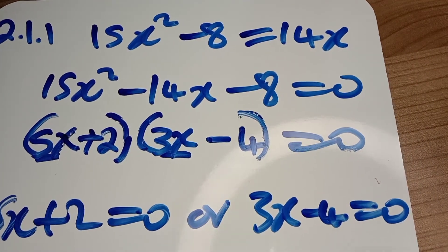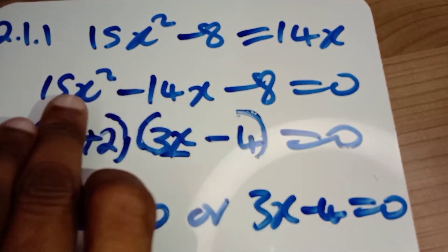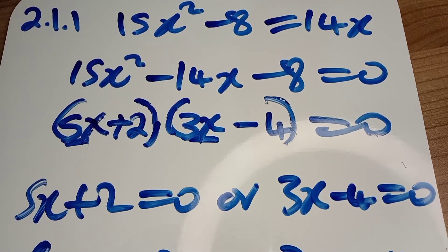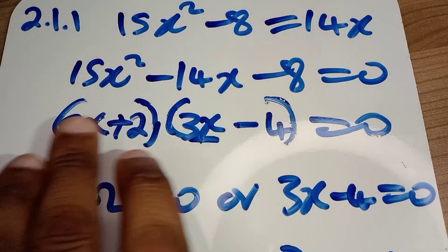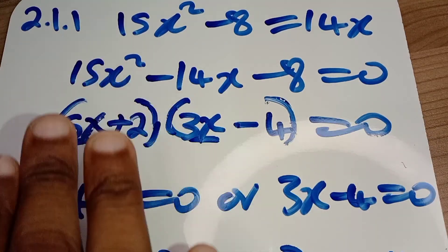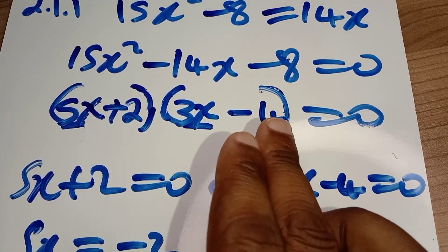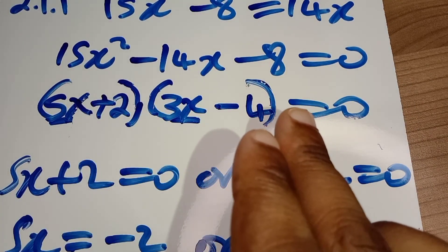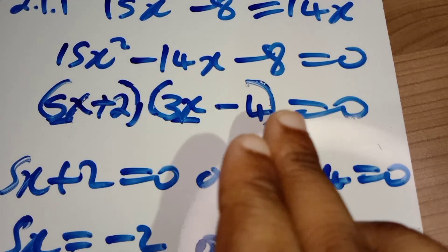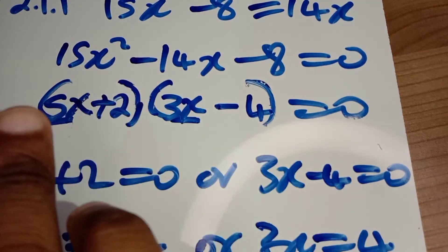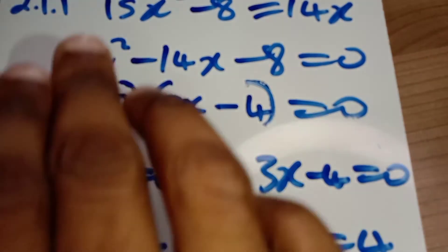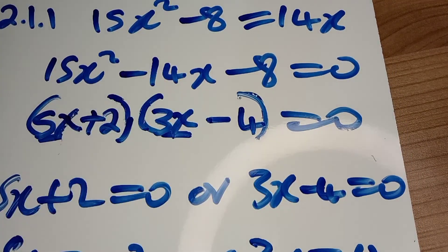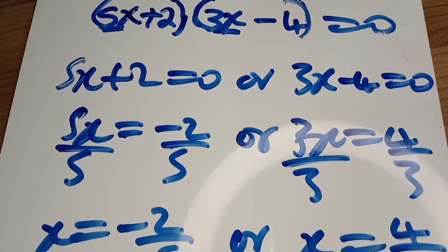To recap: we started with the equation, took the 14x to the other side and arranged it in standard form, then factorized. We chose five and three because they are smaller than 15 and one — 15 is too big and would affect us. For eight we chose two and four, with negative four in its specific position because we needed negative 20x, and we needed positive 6x so that they combine to give negative 14x.